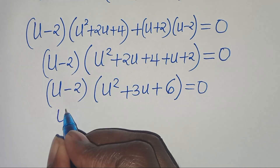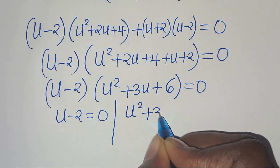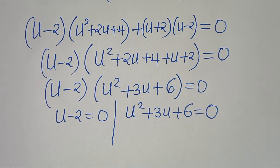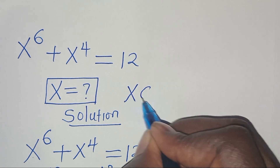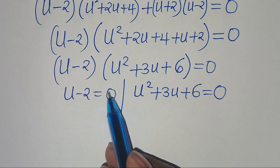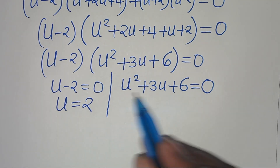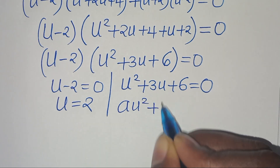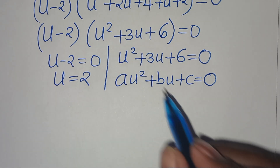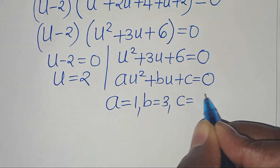We have two parts: the first is u - 2 = 0, giving u = 2. The second is the quadratic u² + 3u + 6 = 0, with coefficients a = 1, b = 3, and c = 6.